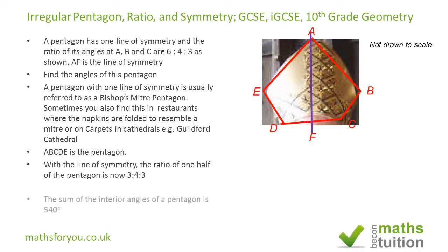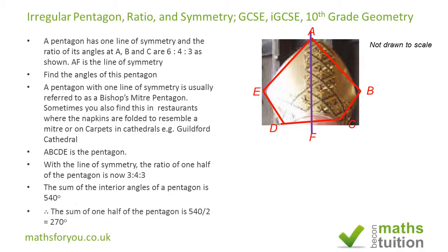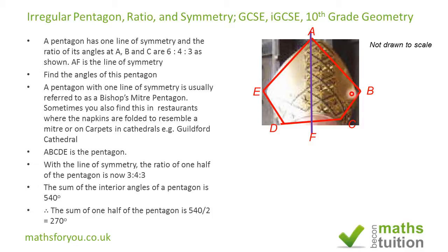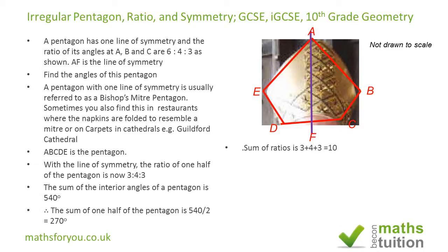The right-hand half mirrors the left-hand half. So the angle D equals angle C, and each half of angle A equals the other. All of these half-angles add up to 270 degrees, which is half of the total interior angle sum of 540 degrees for a pentagon. Our working ratio is now 3 to 4 to 3.